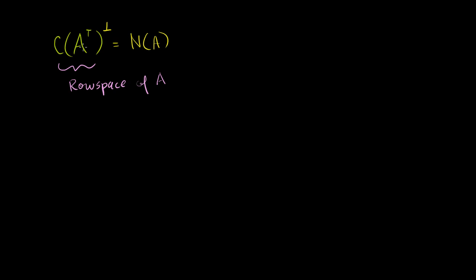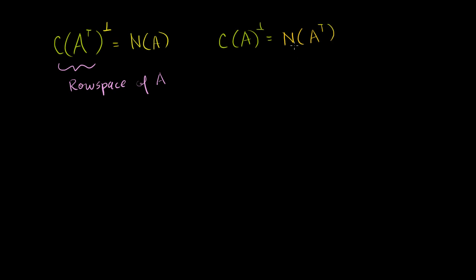And essentially the same result, if you switch A and A transpose: we also learned that the orthogonal complement of the column space of A is equal to the left null space of A, which is the same thing as the null space of A transpose. So the left null space is the same thing as the null space of A transpose.